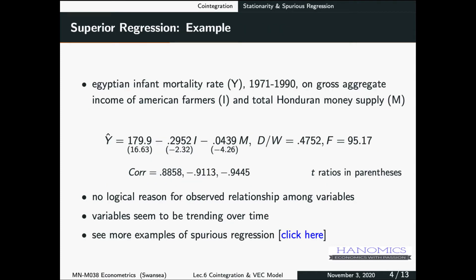So this is an example. So what we have in this example, Egyptian infant mortality rate regressed on gross aggregate income, something that is not related. I mean, there's no logic that would say that infant mortality rate in Egypt would depend on gross income of American farmers and money supply. And what we have here, we have these are the T-ratios. They are significant, very significant.